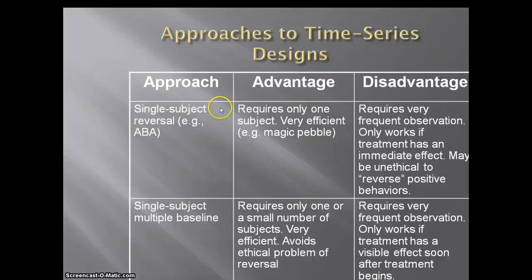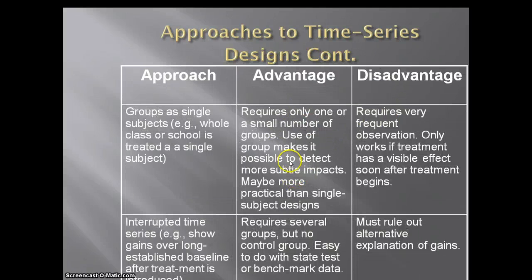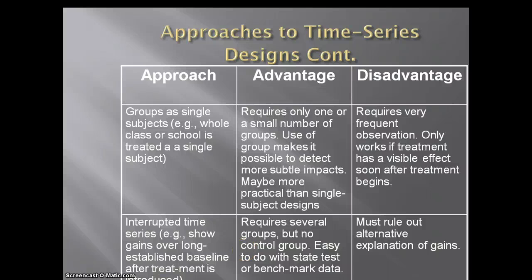Here is an overview of the different approaches: AB, single subject, multiple baseline — with the advantages and disadvantages of both. There is also an interrupted time series design, which is used to rule out long-term time effects. It allows you to do a baseline, wait a while, and then come back and measure the baseline again. It's not as common as the other designs.